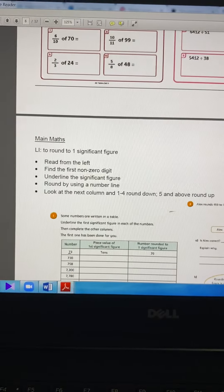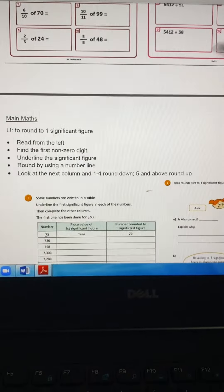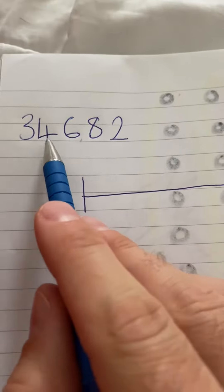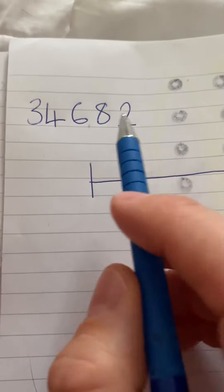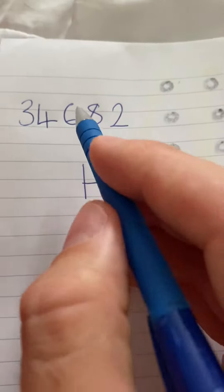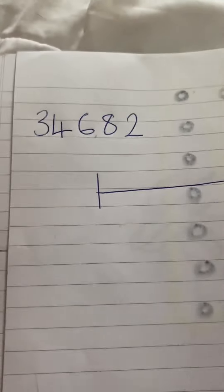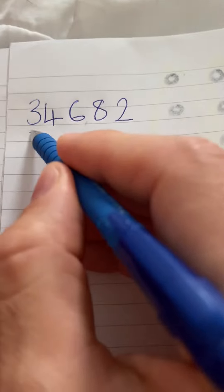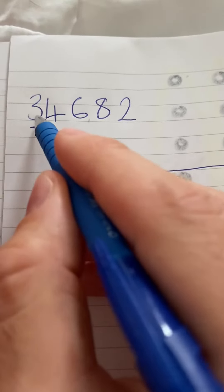Okay, and quite simply, follow these steps. Now to show you, here's a number here, 34,682. Okay, now, one significant figure, what we do is we look at this digit here. The first non-zero digit to the left.